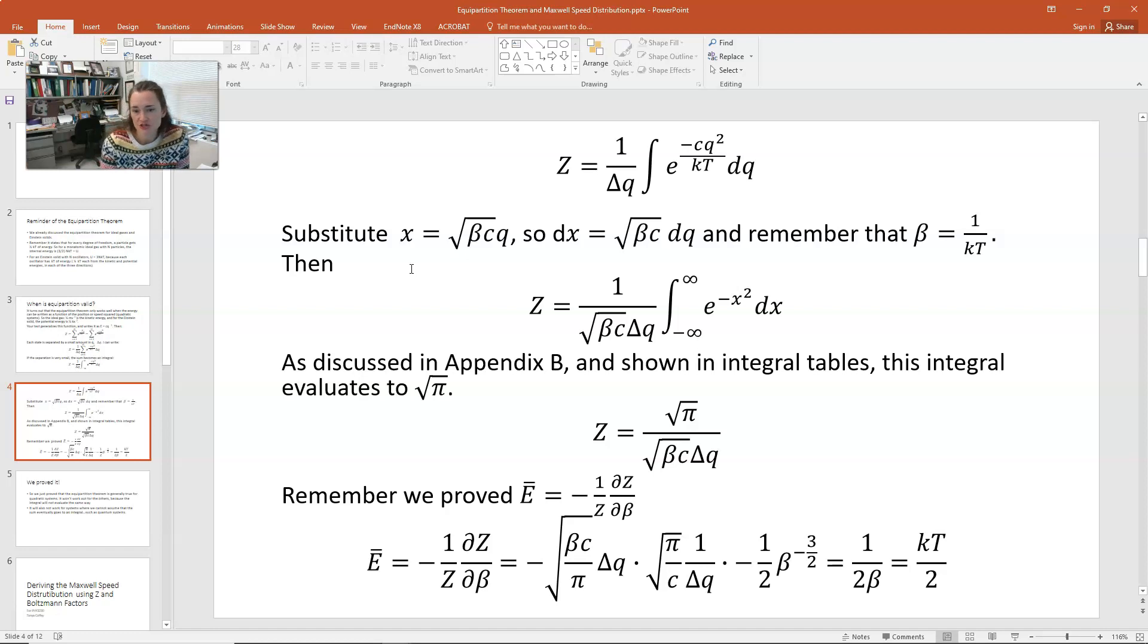Once we have our partition function, we can use it to find some interesting things. In a previous lecture, which you should definitely watch if you haven't watched it, on the rotational energy states, I proved that the average energy, e bar, was equal to negative 1 over z partial z with respect to beta. This is a generally true statement. We derived it in the lecture on rotational energy states and partition functions, but this expression is generally true. Now I'm going to use it.